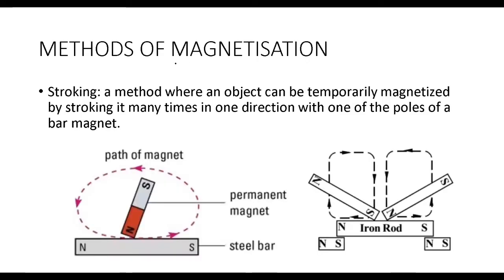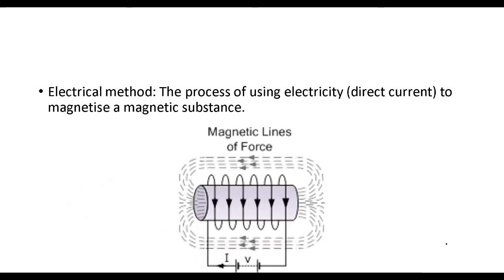How do you magnetize substances such as iron or steel? The first method is stroking, in which you temporarily magnetize a magnetic substance by stroking a bar magnet many times in one direction with one of its poles. You stroke the bar magnet in one direction for a long period of time, and eventually the steel bar will become a magnet. If you use two bar magnets, you are going to have a stronger magnet formed.